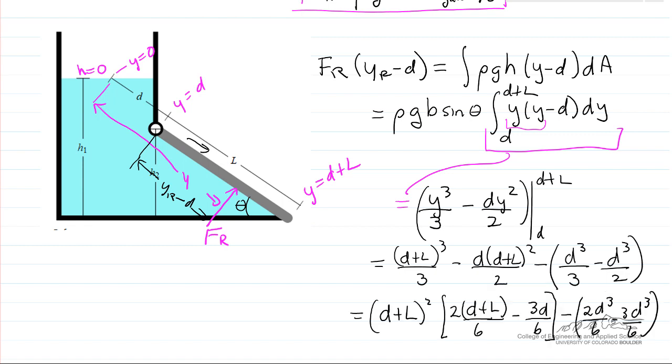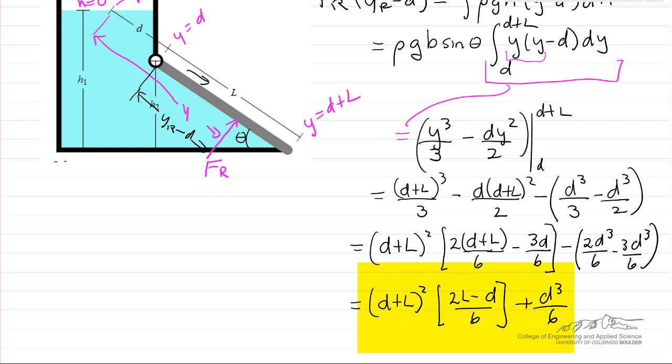So now I have terms I can add together and further simplify. I can substitute this back up here, and I likewise will substitute on the left side, including putting in the value for F_R that we calculated earlier.